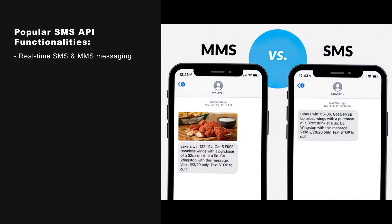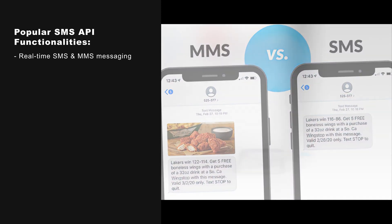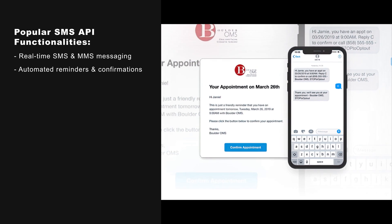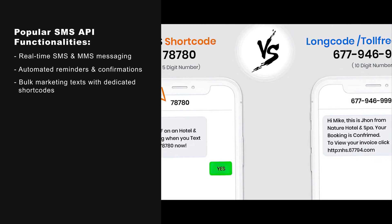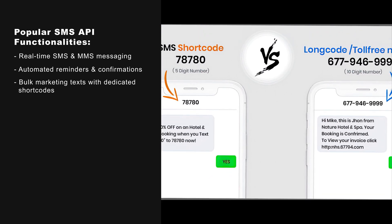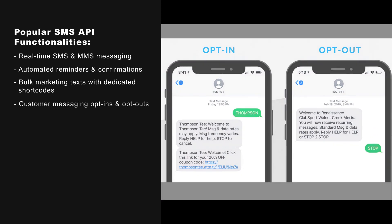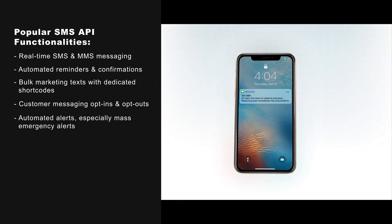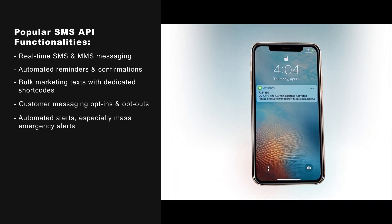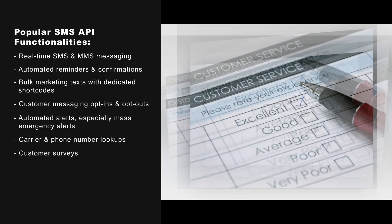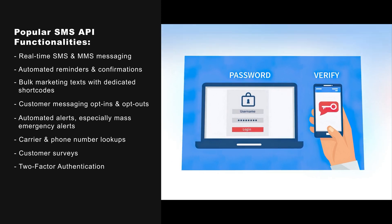Popular SMS API functionalities include real-time SMS and MMS messaging, automated reminders and confirmations, bulk marketing texts with dedicated shortcodes, customer messaging opt-ins and opt-outs, automated alerts — especially mass emergency alerts — carrier and phone number lookups, customer surveys, and two-factor authentication.